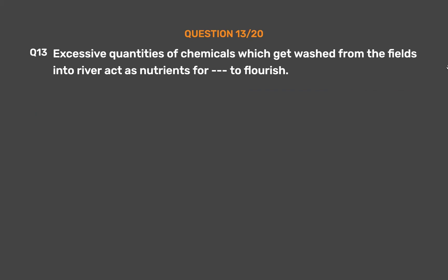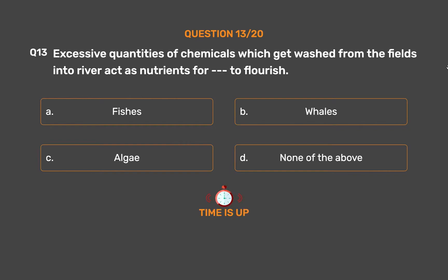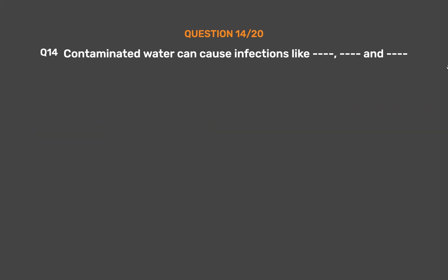Question number 13: Excessive quantities of chemicals which get washed from the fields into rivers act as nutrients for dash to flourish. Option A: Fish. Option B: Whales. Option C: Algae. Option D: None of the above. The correct answer is Option C: Algae. Ponds which look green from a distance have a lot of algae growing in them. This is caused by excessive quantities of chemicals washed from the fields, which act as nutrients for algae to flourish. Once these algae die, they serve as food for decomposers like bacteria. A lot of oxygen in the water body gets used up, resulting in a decrease in oxygen level which harms aquatic organisms.